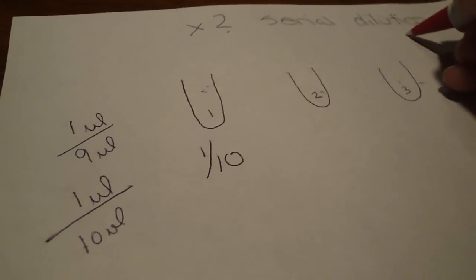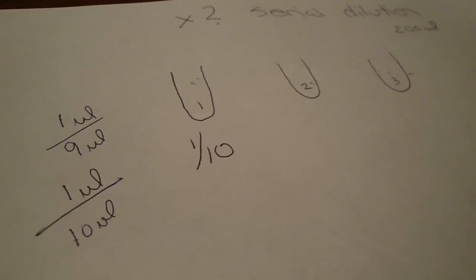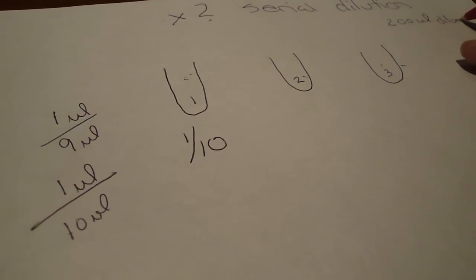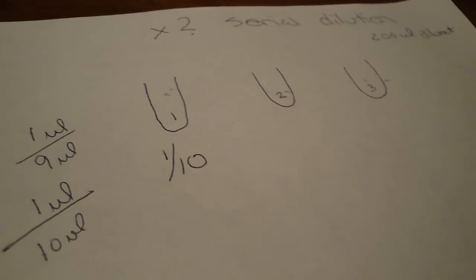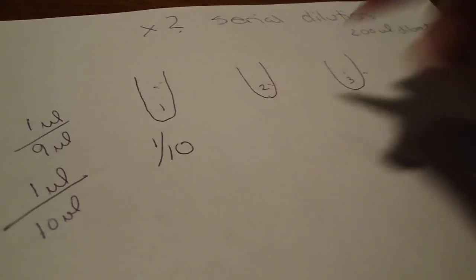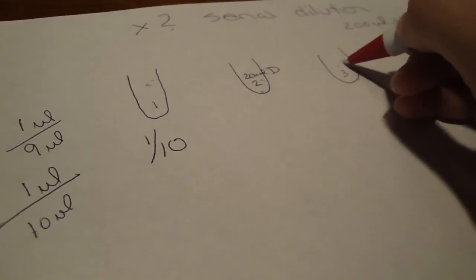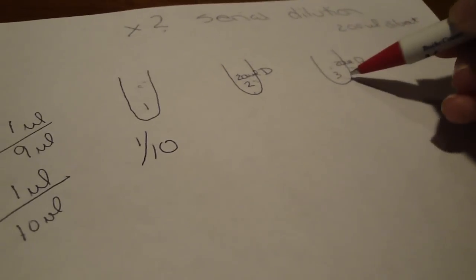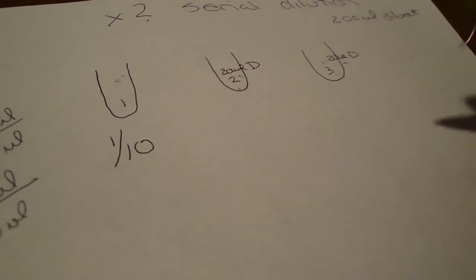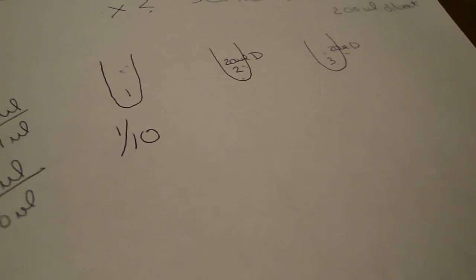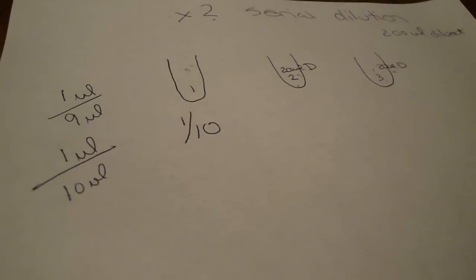We're going to start with, we're just going to use 200 microliters of diluent. You would take your pipette, put your tip on, go into this and you would go ahead and in tubes two and three, you would put 200 microliters of diluent. You could go out farther, you could go out to infinity and you would put 200 microliters of diluent.